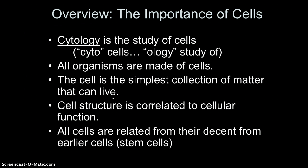For example, we have cardiac cells that make up the heart, muscle cells that have a certain job, epithelial cells that serve as linings such as our skin, and nerve cells which all carry out certain functions. All cells are related from their descendants, and those earlier cells are what we call stem cells. In this chapter we're going to hit upon some very important topics of biology, including stem cell research and cancer biology.